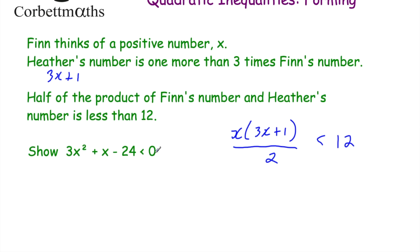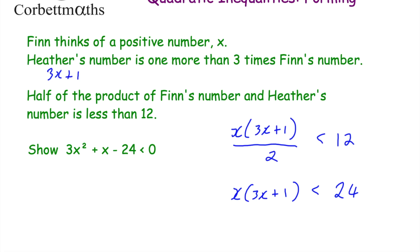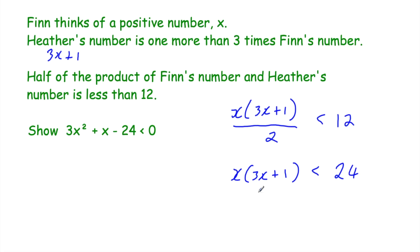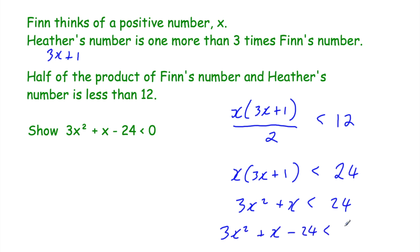Let's rearrange this to get to the required inequality. Multiply both sides by 2 to remove the divide by 2, leaving x bracket 3x plus 1 on the left and 24 on the right. Expanding the brackets gives 3x squared plus x, and that is less than 24. Now take 24 from both sides: 3x squared plus x minus 24 is less than 0. We've shown the required inequality.